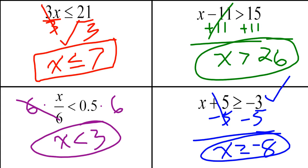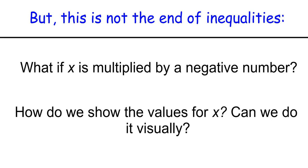That covers solving basic one-step inequalities. We can make them more complex with multiple steps or the distributive property. Two key questions remain: first, what happens when we multiply or divide by a negative number? — since on a number line, 1 is less than 2 but negative 1 is greater than negative 2. Second, can we find a visual way to show all solutions? That second question will be covered in the next video lesson; the first will be addressed at the end of this lesson.